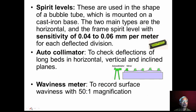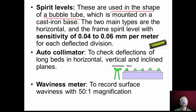Spirit levels are also used while conducting alignment tests on machine tools to check the flatness of bases and tables and to check the straightness of guideways. These are used in the shape of a bubble tube mounted on a cast iron base. Two main types are used: a horizontal type and a frame spirit level, with a sensitivity of 0.04 to 0.06 mm per meter for each deflected division.